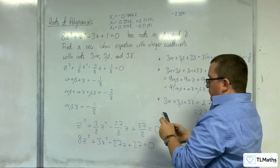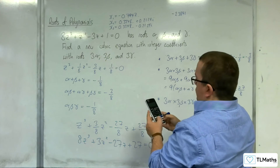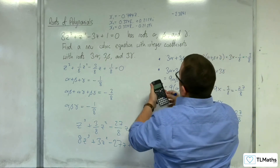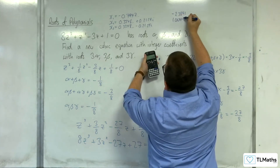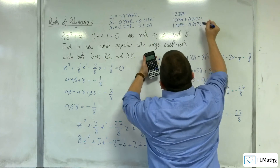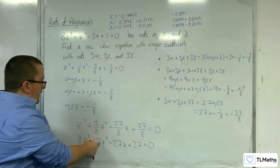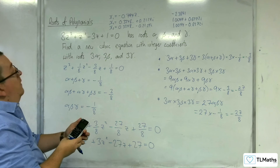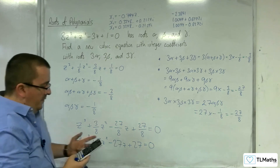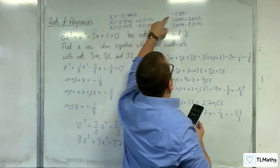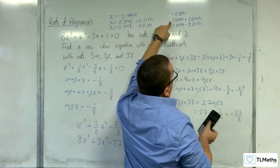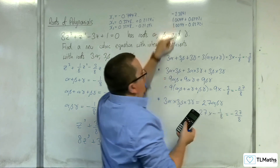Putting the calculator into complex mode, 0.3348 plus 0.2124i times 3 gives approximately 1.0044 plus 0.6372i, and its complex conjugate. Now putting the new cubic — 8, 3, minus 27, 27 — into the cubic solver: we get minus 2.384247, and 1.00462351 plus 0.63739i. That confirms it — the new cubic has the correct roots.